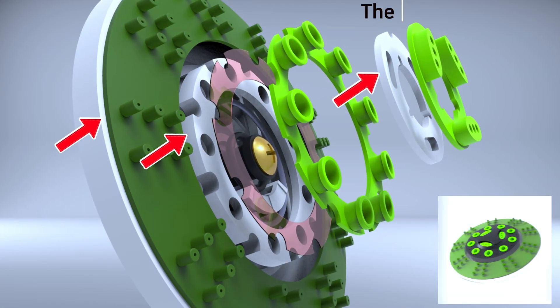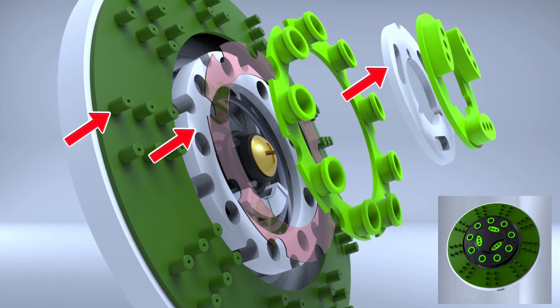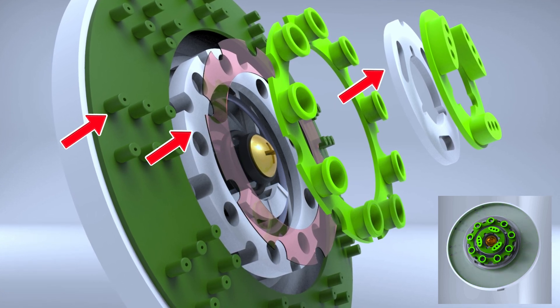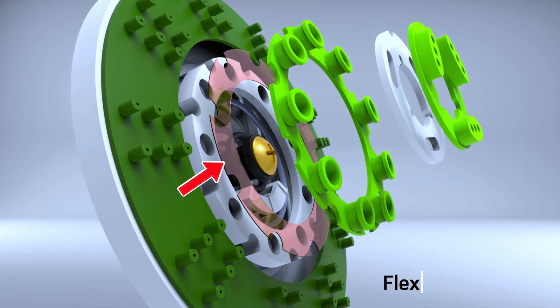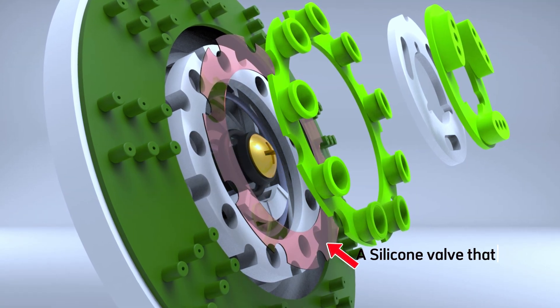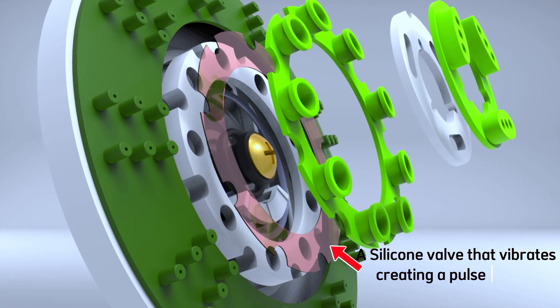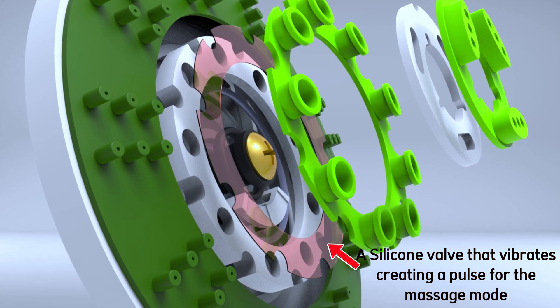Next, we have the nozzle chambers which are separate water pathways that lead to the different groups of nozzles on the spray plate. They ensure that only certain zones receive water at a time, depending on the selected mode. Next, we have the flexible diaphragm which is useful for pulsating spray. This is just a small rubber or silicone valve that moves back and forth when water flows through it. It creates the massage effect by pulsing the water pressure.